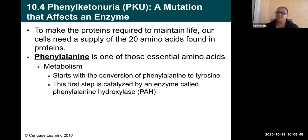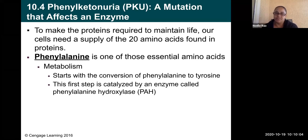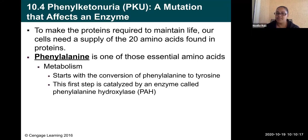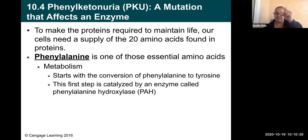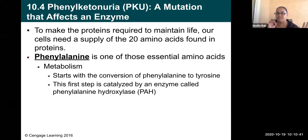To make the proteins required to maintain life, our cells need a supply of 20 amino acids found in proteins. Our bodies make half and we get the other half from food. Phenylalanine is one of those essential amino acids. Metabolism of phenylalanine starts with its conversion to tyrosine — a different amino acid — and that first step is catalyzed by an enzyme called phenylalanine hydroxylase, or PAH for short. The gene codes for PAH, and PAH converts phenylalanine to tyrosine — step one in our metabolic pathway.